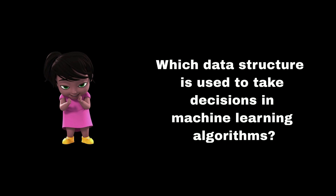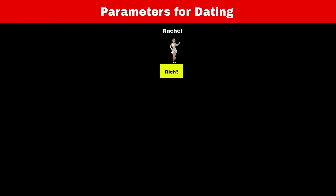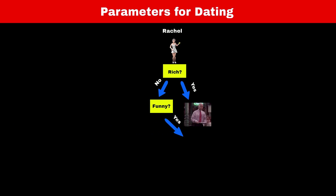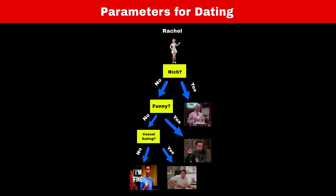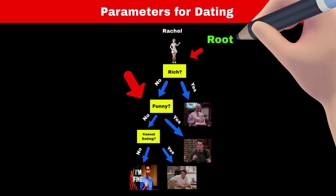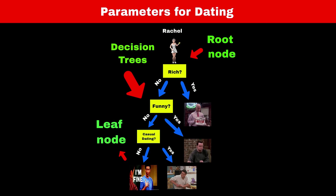Do you know which data structure is used to take decisions in machine learning algorithms? Consider Rachel deciding whom to date among Ross, Joey, Chandler, and Gunther. She checks various factors: is the guy rich? Gunther is very rich, so she can go for him. Joey, Ross, and Chandler are moderately rich. If she wants someone moderately rich and funny, she can choose Chandler. If she doesn't want a funny guy and wants something casual, she chooses Joey; for something serious, she chooses Ross. The data structure that helps take decisions based on parameters is called a tree. The first node is called the root node, and using it we can traverse the entire tree. Nodes on the last level are called leaf nodes, which are usually the results. This type of tree is called a decision tree, used in machine learning algorithms.